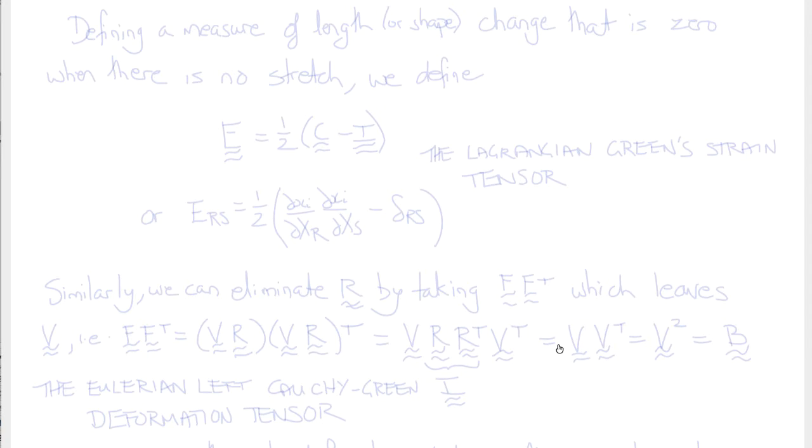Engineers like to define shape change or strain in a way such that when there's no shape or length change, the quantity is zero. Whereas if there's no stretch, U would be I, and therefore C would be I. So to define the strain tensor, we subtract I from C.